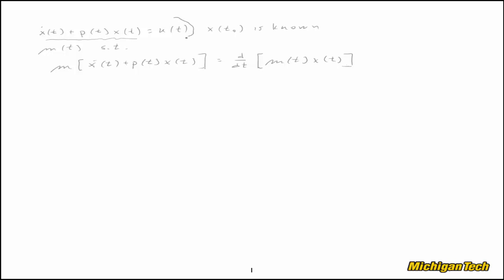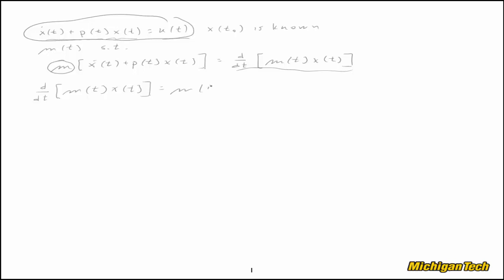What we'll do is take this entire differential equation and multiply it by this function m(t). The left-hand side is now just d/dt of m(t)·x(t), which is equal to m(t) times u(t). Now that's a good thing — we can solve the differential equation, that is find x(t), simply by integrating both sides.